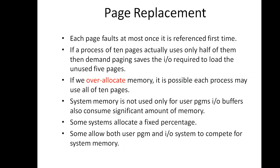It may happen that each of these processes for a particular dataset may suddenly try to use all of its 10 pages, resulting in a need for 60 frames when only 40 frames are available. So if they try to use all 10 pages, we have only 40 frames but the system requires 60 frames — this indicates over-allocation of memory.